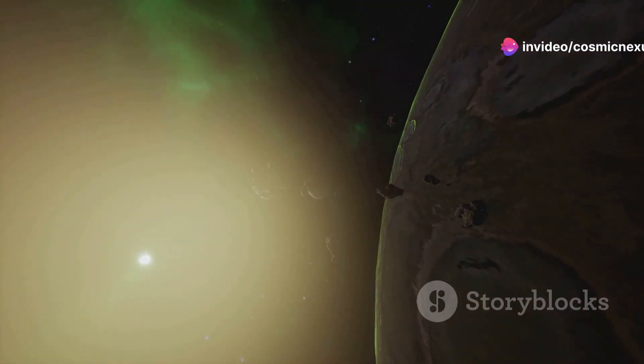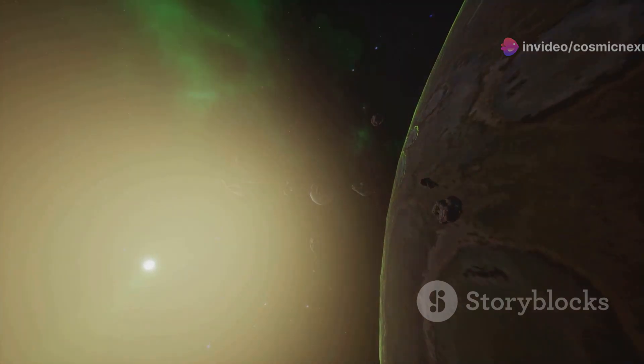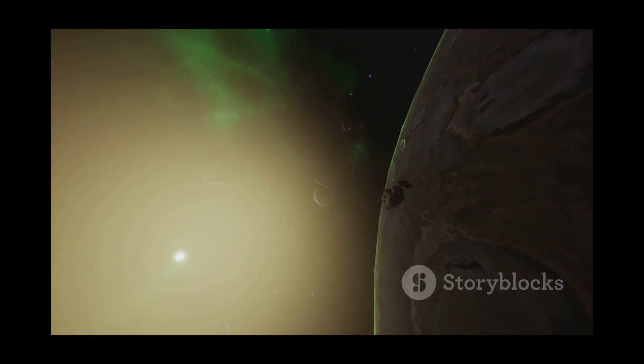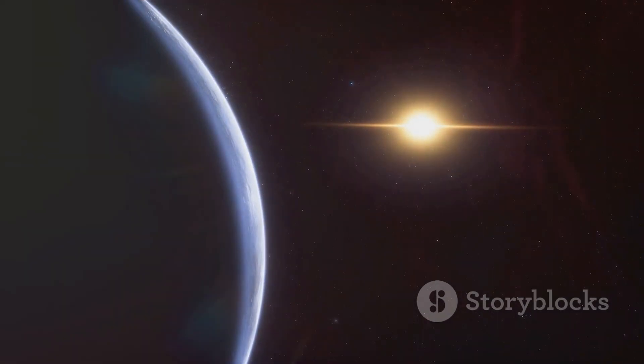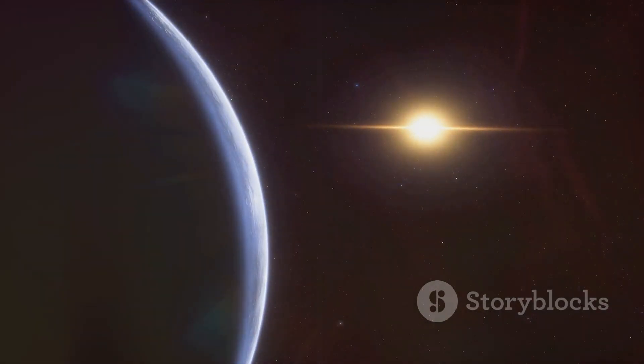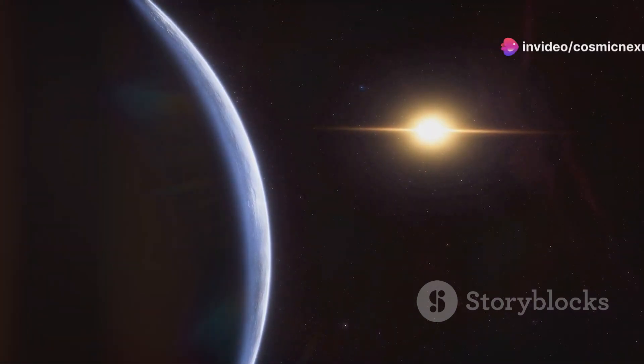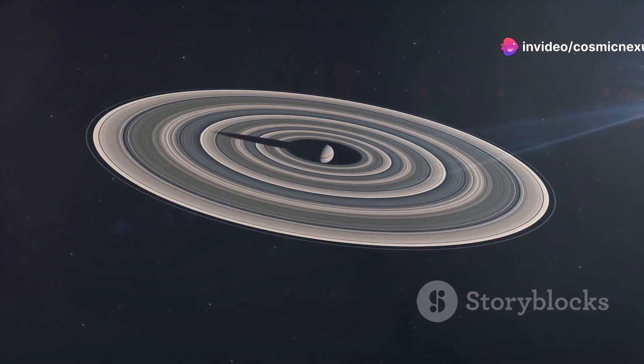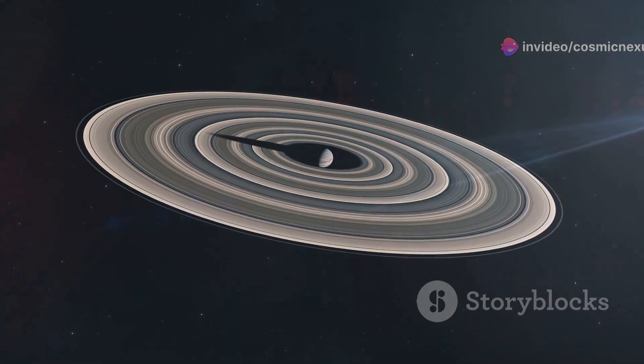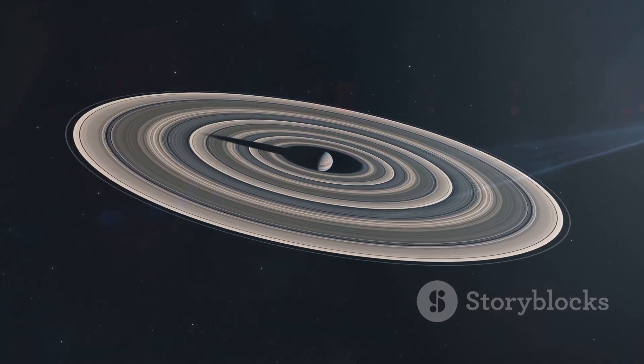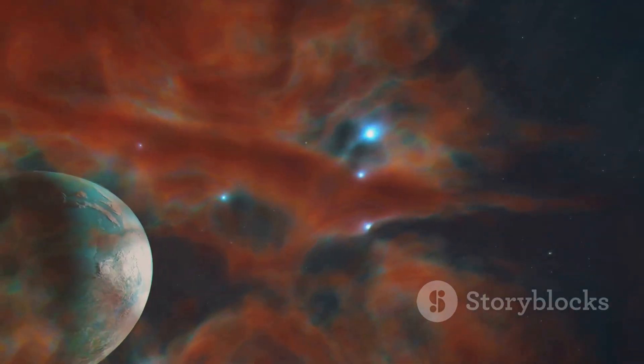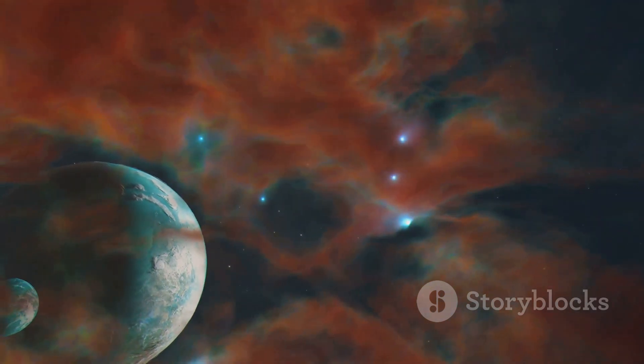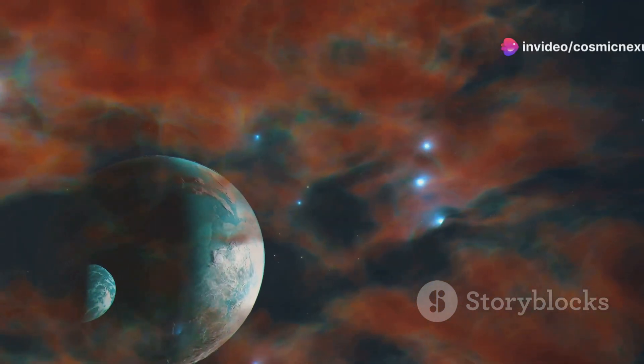However, this model doesn't easily explain the existence of rogue planets, especially binary pairs. These planets, adrift in the void, suggest that planet formation can occur outside the confines of a traditional star system. Perhaps these rogue planets formed within a star system but were later ejected due to gravitational interactions with other planets. Or maybe they formed independently, born from the collapse of a small, isolated cloud of gas and dust.